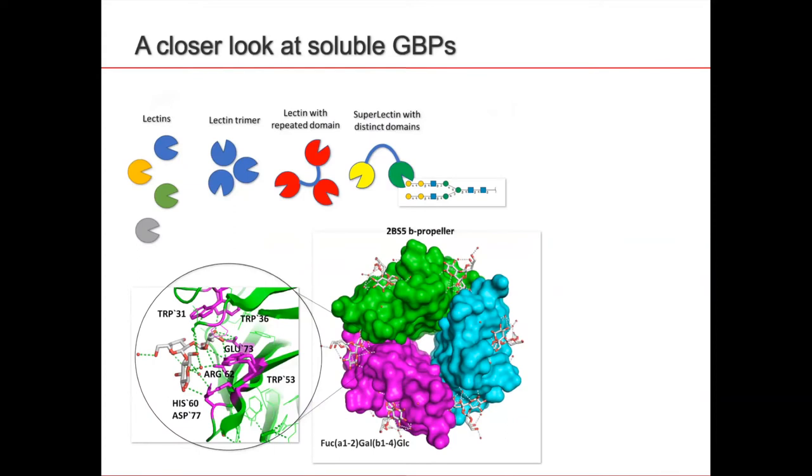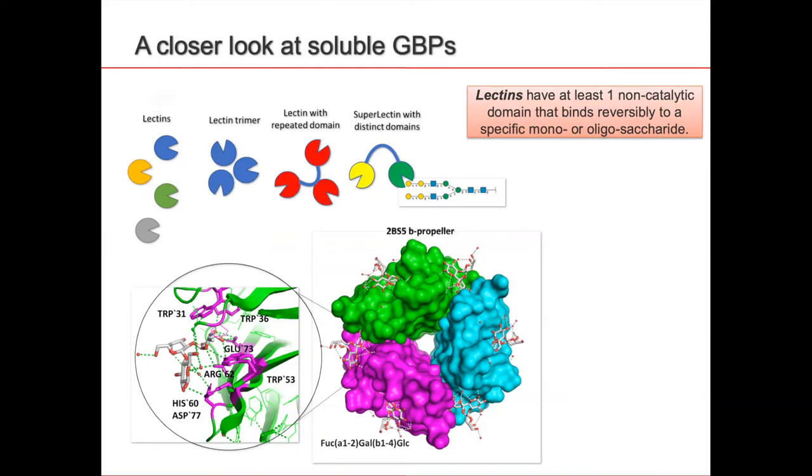A lectin is actually a protein that has at least one non-catalytic domain that binds to a specific - I use glycans, I use oligosaccharides, I use sugars, these are all synonyms, and these are the sort of representation, simplified representation, otherwise you have them like this with a lot of carbon rings here, and this is just to simplify.